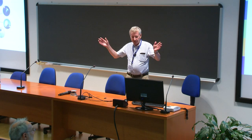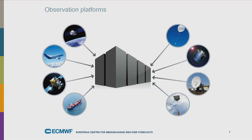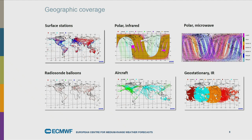To do weather forecasts you need observations, and we use all the observational data we can get hold of: commercial aircraft, different types of satellites, ships, radiosondes, weather balloons, radars, and surface stations. We continuously receive information from all these observations fed into our computers. The global distribution of observations is very uneven. We make some use of surface station data, especially surface pressure observations, but we have difficulties using all surface observations because they represent fairly small scales that we cannot model well with our global forecast system.